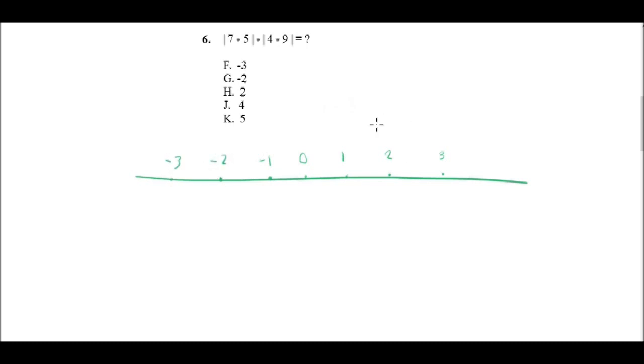For example, if I have 1 minus 3, that equals negative 2. So then you can ask, well, what's the distance from zero of negative 2? Well, the distance is just 2. So if you count over one space, two spaces in whole numbers, it's just 2 from zero. And you can go the other way, too.